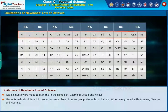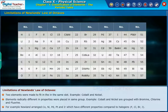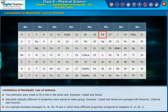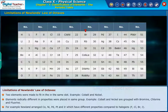Elements radically different in properties were placed in the same group. For example, cobalt and nickel are grouped with bromine, chlorine, and fluorine. Cobalt, nickel, palladium, platinum, and iridium have different properties compared to halogens such as fluorine, chlorine, bromine, and iodine.